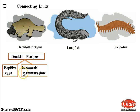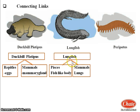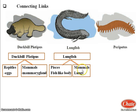The second example is lungfish. Lungfish have a fish-like body like the Pisces animals, but perform respiration with lungs like mammals. Hence, lungfish is a connecting link between the Pisces and the mammals.